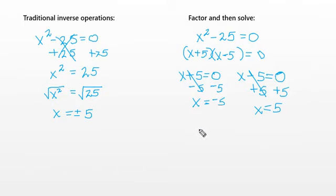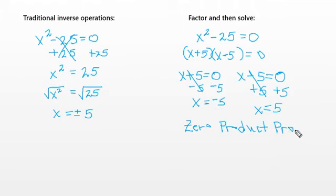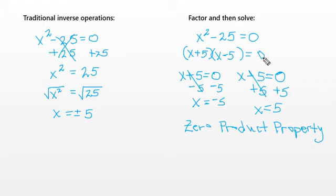This process is called the zero product property. It's the property that allows us to set each factor equal to zero. We know the product of these factors is zero, therefore one of the factors must be zero — that's the zero product property.